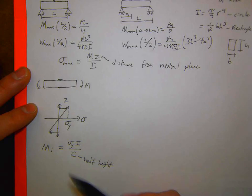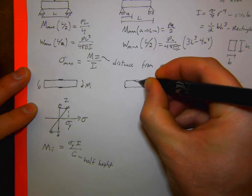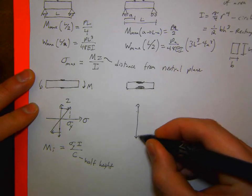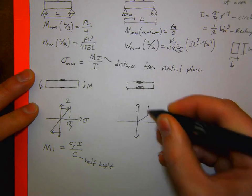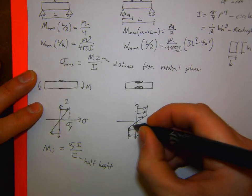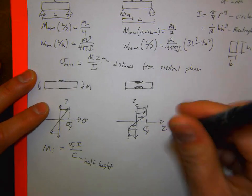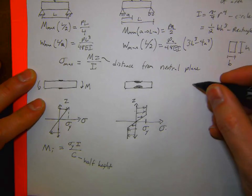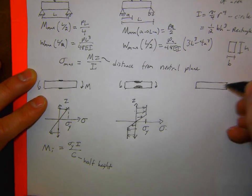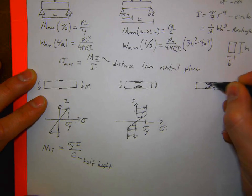The moment where the beam starts deforming plastically — getting plastic deformation along the top and bottom edges — is M = σ_Y × I/c, where c is half the height, the max distance from the neutral plane. Rearranging that equation: if max stress equals the yield stress, then M = σ_Y × I/z. There's an intermediate point where there's some plastic deformation along the top surfaces.